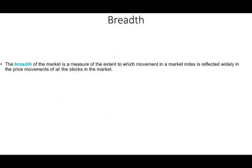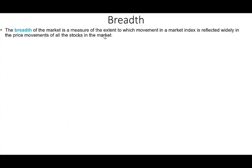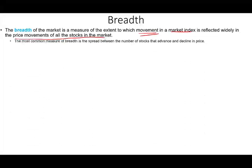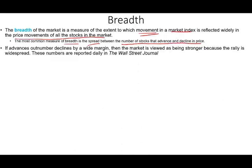Another momentum measure in the market is the breadth of the market. The breadth of the market measures the extent to which movement in the market indexes is reflected widely in the price movement of all stocks in the market — how well everyone is doing, not only the index itself. The most common measure of breadth is the spread between the number of stocks that advance and decline in price. If advances outnumber declines by a wide margin, the market views it as stronger because the rally is widespread — it means everybody is participating.